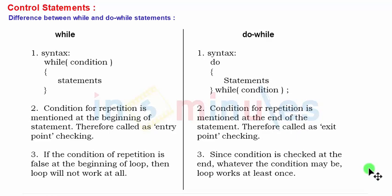And then if you want, you can give a simple example like variable a initialized to 1, while a less than or equal to 3, and then some printf hello and a++, that will print hello three times.